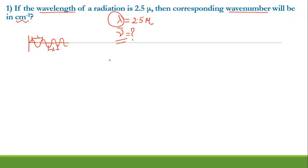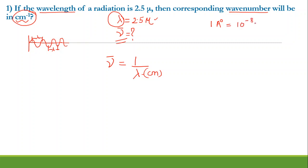Wave number is inversely proportional to wavelength. If I want to know it in centimeter inverse, then lambda should be in centimeters, but right now it is in mu. If the wavelength is represented in terms of Angstrom you can convert it as 10 to the power minus 8. Similarly, if it is in nanometer it would be 10 to the power minus 9 meter, and that means 1 mu is equal to 10 to the power minus 4 centimeter.